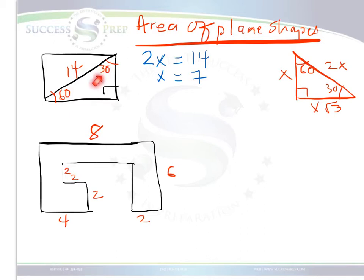And this angle 30 here is facing this side. So as a result, we can say that this side is 7.